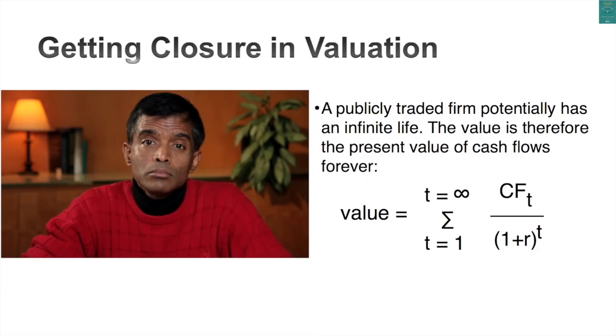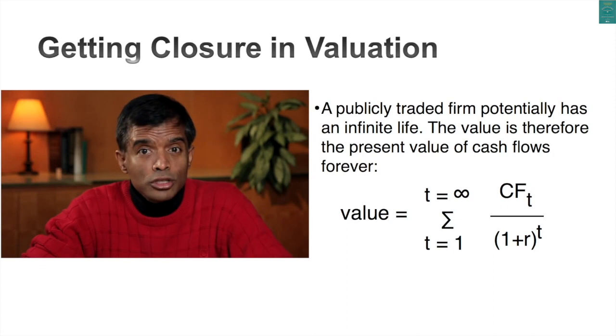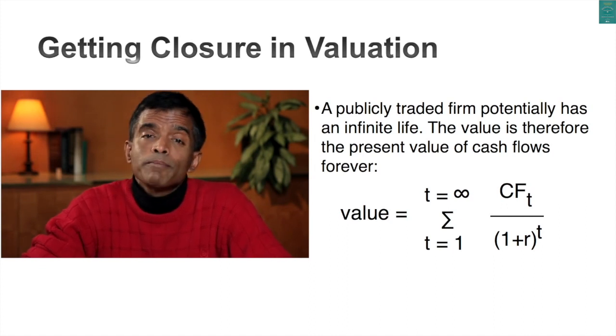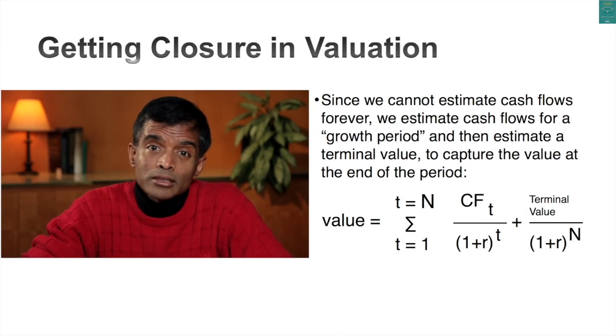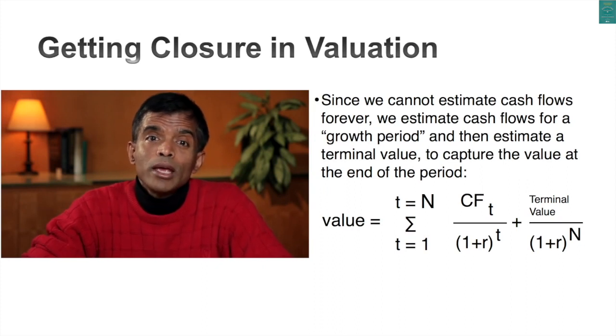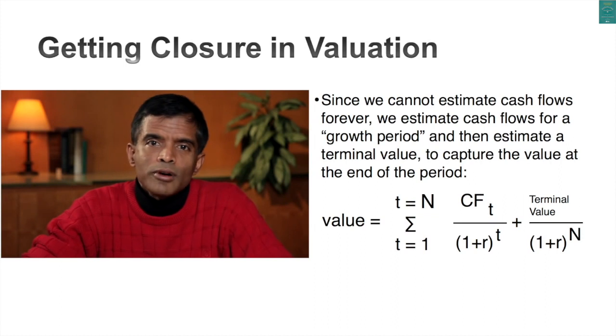You can't estimate cash flows forever. The value of an asset is the present value of its expected cash flows over time. But what if you have an asset that potentially could last forever, as is the case with a publicly traded company? Since you cannot estimate cash flows forever, at some point in time you've got to stop. But you can't give up on cash flows either. What most people do is estimate what's called a terminal value — that number used as a bookend to capture what will happen beyond year 5 or 10.